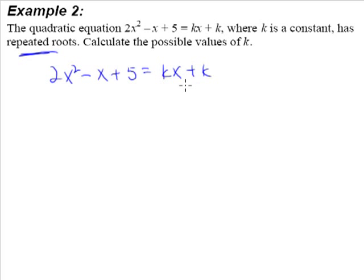Whenever you have any terms on the right-hand side of the equation, you have to bring it over to the left-hand side. So in this case, we have 2x² - x - kx + 5 - k = 0. It is important that we must always equate it to zero, and we always group the x terms together and all the constant terms together.